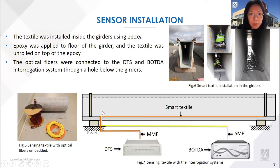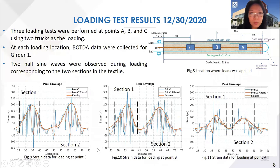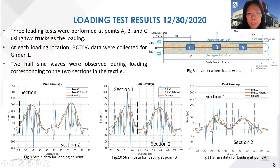Before the girders were installed on the bridge, we went to Maine to install our sensing textile inside the girder. Figure 5 shows the sensing textile with optical fibers embedded before installation, and Figure 6 shows the sensing textile installed in the girders by epoxy. The optical fibers were connected to the integration system — the BOTDA and DTS — through a hole under the girder. On December 30th, 2020, we went to Maine to conduct the first field test, where two trucks were stopped at positions A, B, and C respectively on the bridge.